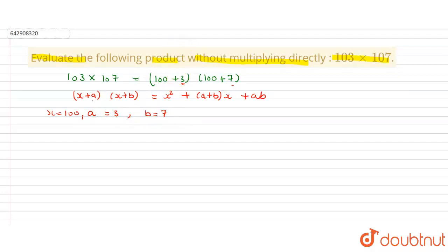Now we'll put our values in. (100+3) times (100+7) equals x², which means 100².